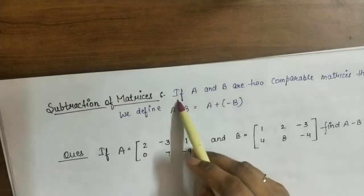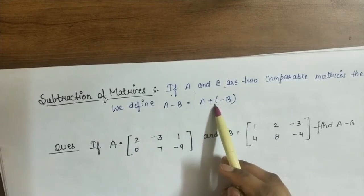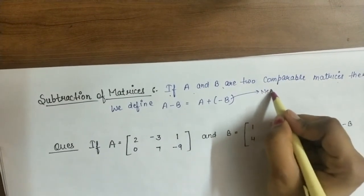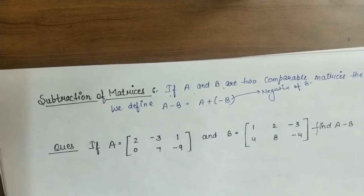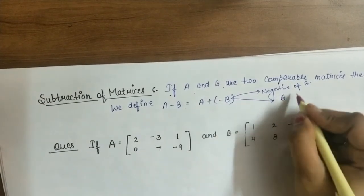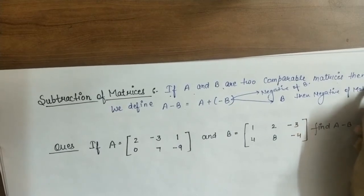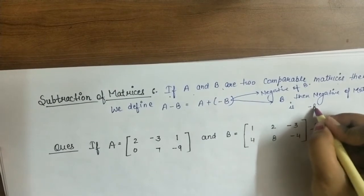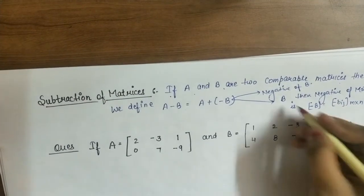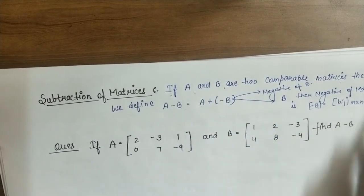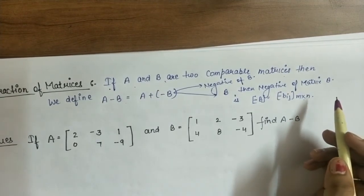Subtraction of matrices: if A and B are two comparable matrices, then we define A-B = A + (-B). To find the negative of a matrix B of order M×N, -B equals [-B_ij] of order M×N. We simply replace each element by its additive inverse.